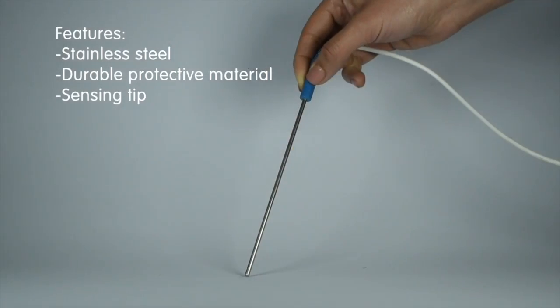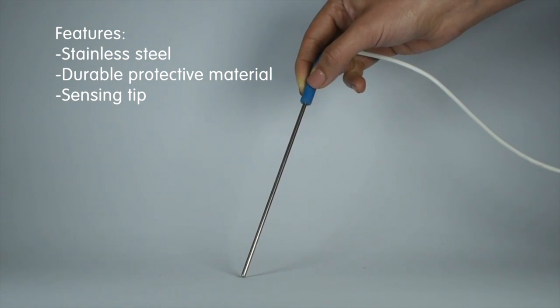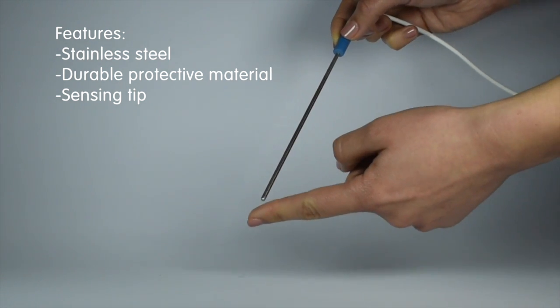Our all-purpose temperature sensor is made of stainless steel and covered with a protective material, making it much more durable than the traditional glass thermometer. The sensing element is located at the tip of the metal probe.